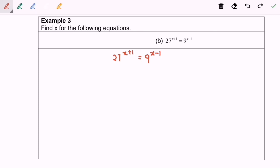So simplify: 3 to the power of 3 bracket x plus 1 equals to 3 to the power of 2 bracket x minus 1.